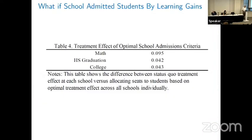What would happen if schools admitted students by learning gains? Going to every single school and asking which students would learn the most, then taking the average across schools — because school quality is mostly vertical, not horizontal, the effects are not as large: 0.095 standard deviations for math and about 0.04 for high school graduation and college.